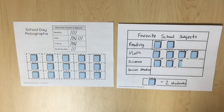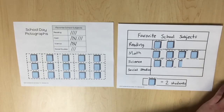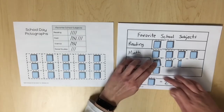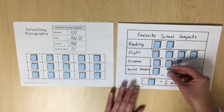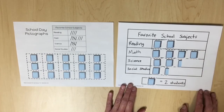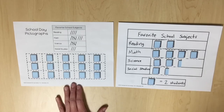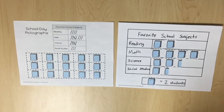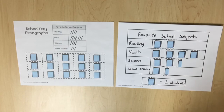Repeat this process to represent the 3 students who chose social studies — one whole symbol for 2 students and a half symbol for the remaining 1 student, representing a total of 3. After creating the graph, students should draw conclusions and make predictions. Drawing conclusions involves interpreting the information given in the graph, while making predictions involves going beyond the data — extrapolation of the data given.